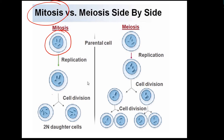So we have a cell with 4 chromosomes. Replication occurs and the chromosomes appear double because the DNA has replicated. Then the cell divides and half a chromosome goes into each cell. That's what happens in mitosis.